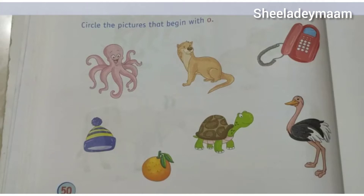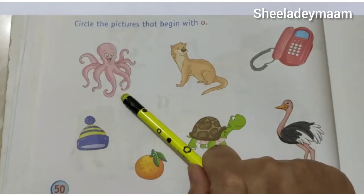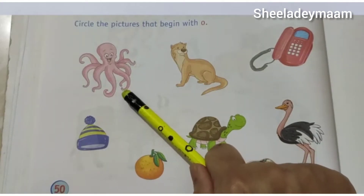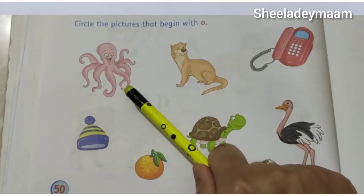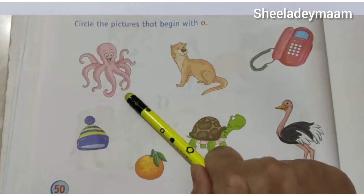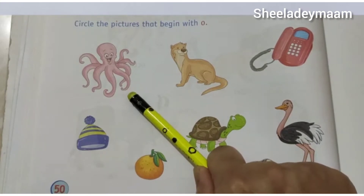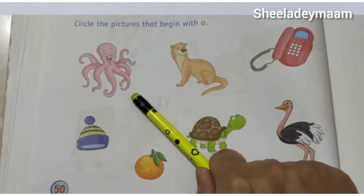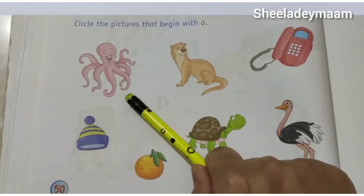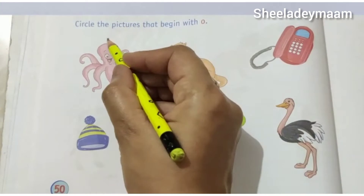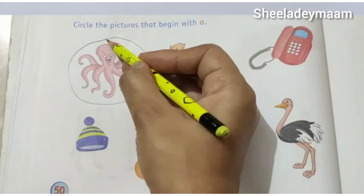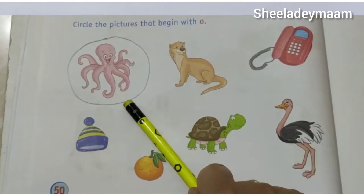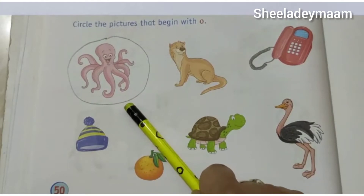And our first picture is — what is this, children? This is an octopus. O for octopus. Now we have to circle the picture as it begins with the letter O. O for octopus.